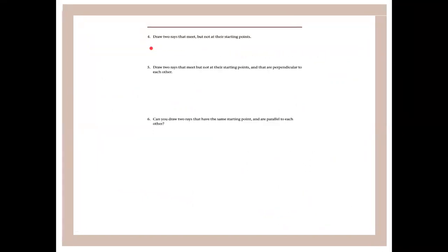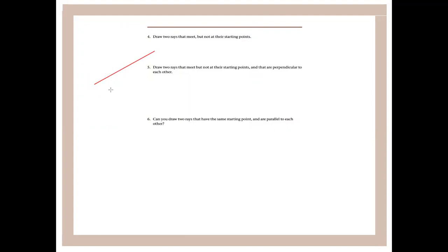Draw two rays that meet but not at their starting points. Draw one ray and a second ray with two separate starting points, so they meet somewhere along their lengths rather than at their origins. Label them AB and CD, where A and C are the separate starting points.